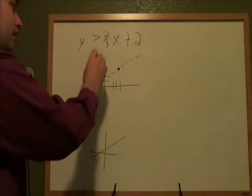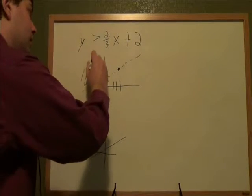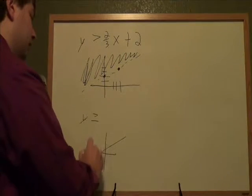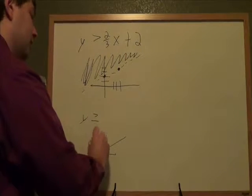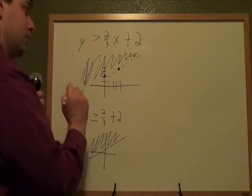Now, then we have to either shade above the line or below the line. And the trick is just, if it's a greater than, you shade above the line. If it's a greater than or equal to, that's still some kind of greater than, so you shade above the line. If it had been a less than of some kind, you would have shaded below the line.